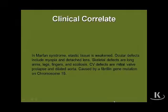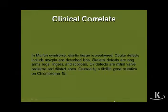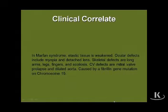In Marfan syndrome, elastic tissue is significantly weakened. This presents with significant ocular deficits including a detached lens and myopia. Skeletal deficits are classic signs, including elongated arms, legs, fingers, and scoliosis. Cardiovascular deficits — probably the most clinically significant features — include mitral valve prolapse and a dilated aorta. The cause is a fibrillin gene mutation on chromosome 15.